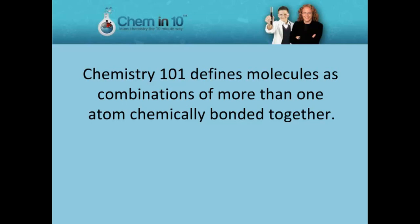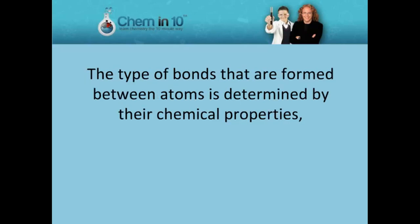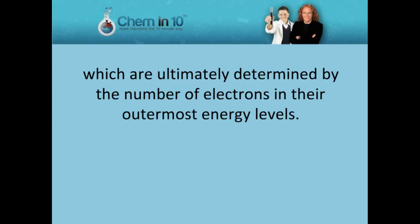The type of bonds that are formed between atoms is determined by their chemical properties, which are ultimately determined by the number of electrons in their outermost energy levels.